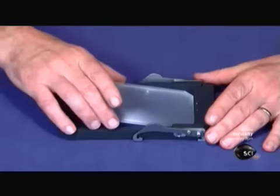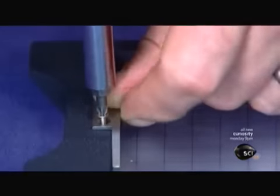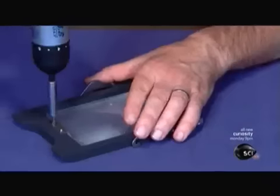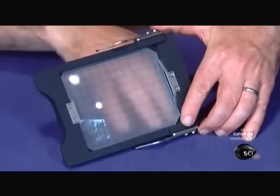Moving now to the focusing screen, it's made of ground acrylic to diffuse light. He protects the acrylic from scratches with a glass plate and secures the assembly with stainless steel clips.